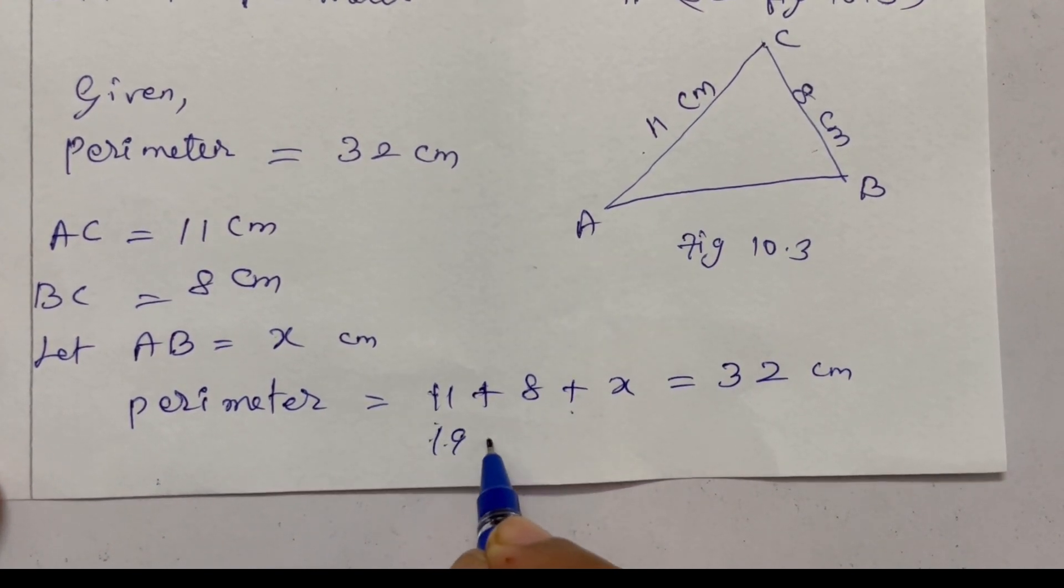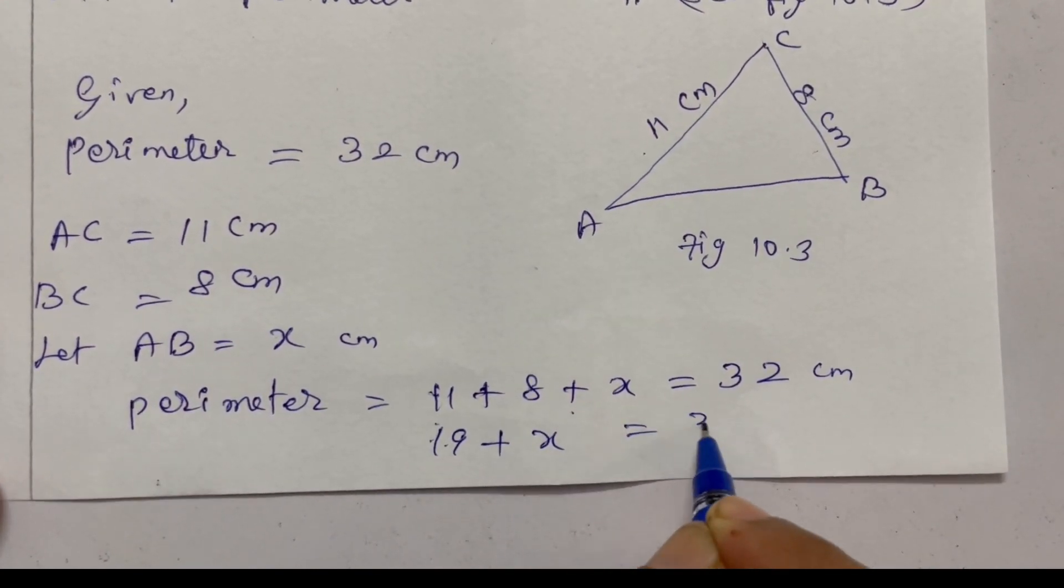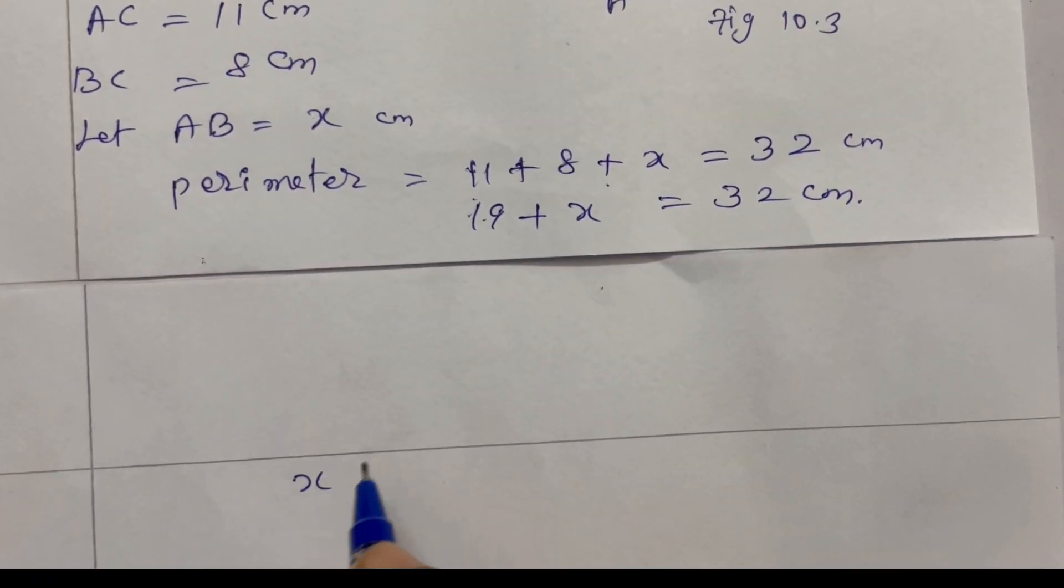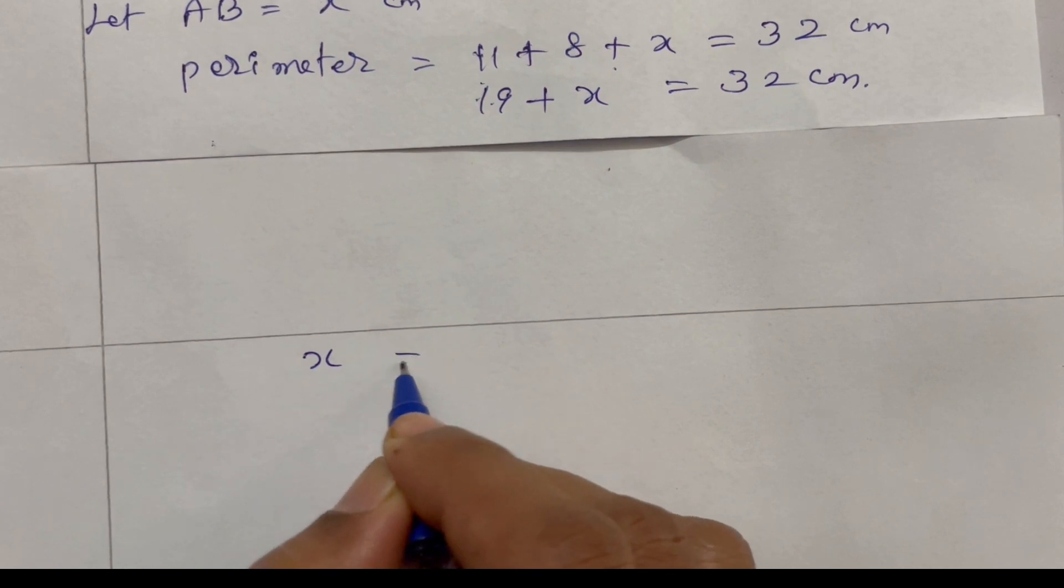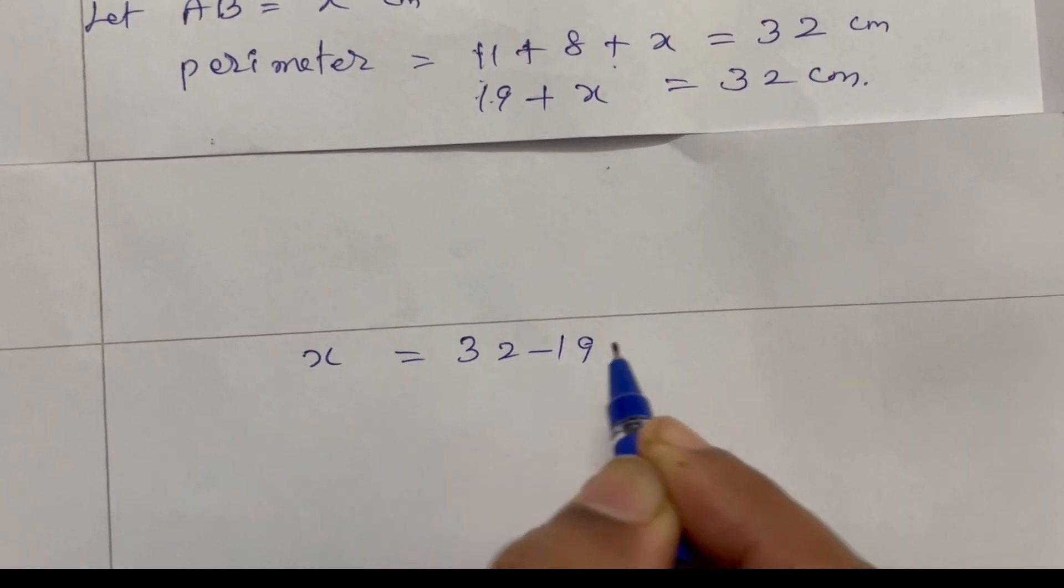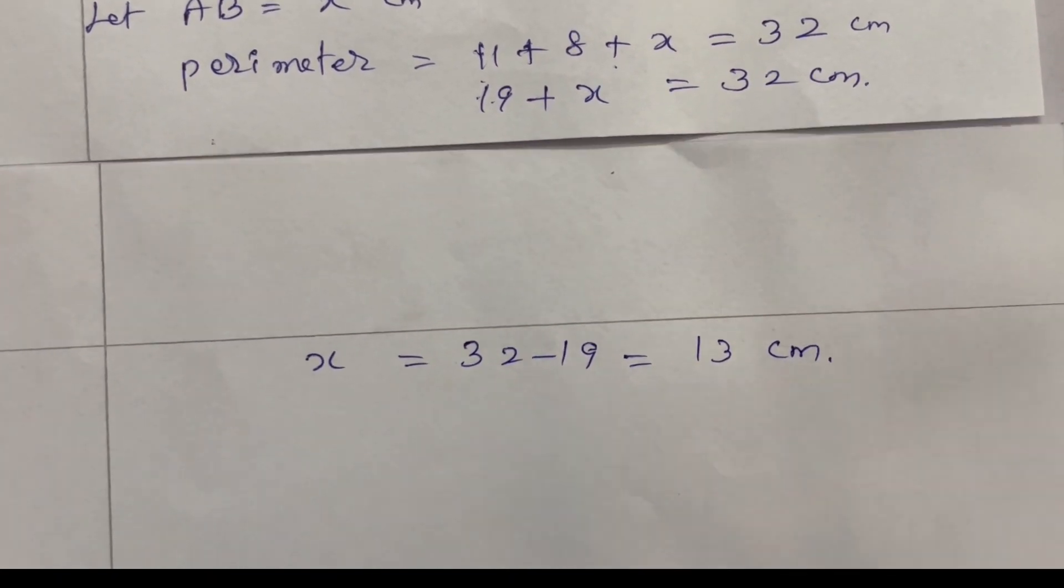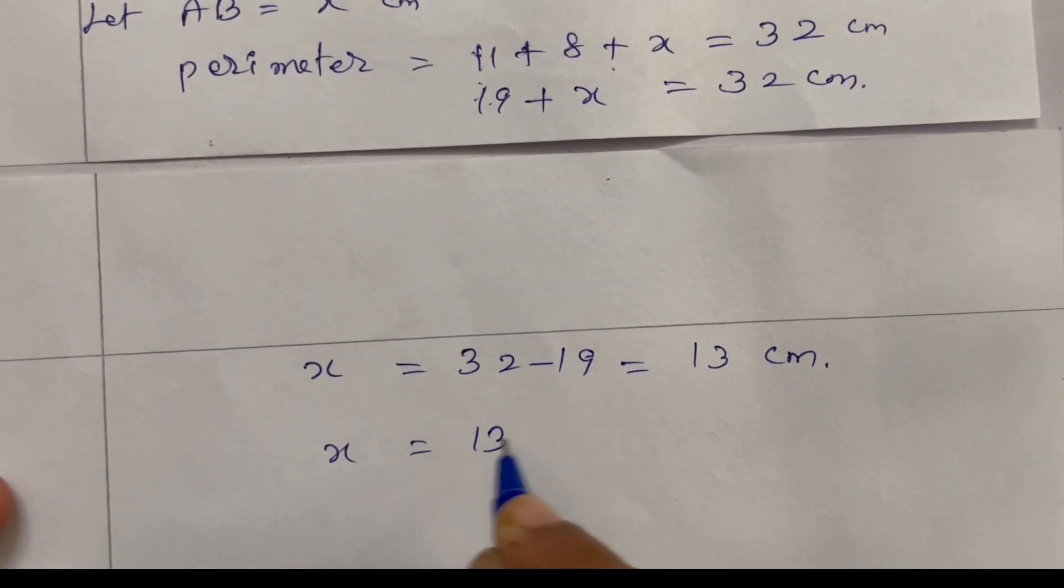19 plus x equal to 32 cm. x is equal to 32 minus 19, equal to 13 cm.